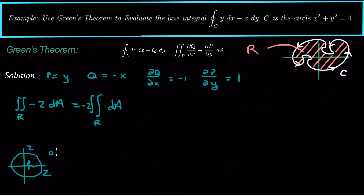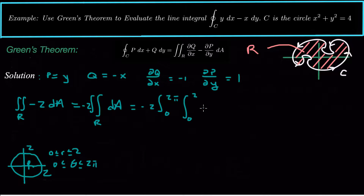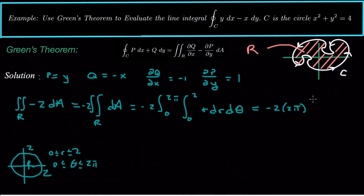In this case, r is going from 0 to 2 and theta is going from 0 to 2π. So plugging those bounds in, this becomes negative 2 times the integral from 0 to 2π times the integral from 0 to 2. Converting to polar coordinates, dA becomes r dr dθ. This equals negative 2 times 2π — since I can do the theta integral separately — times the integral from 0 to 2 of r dr.